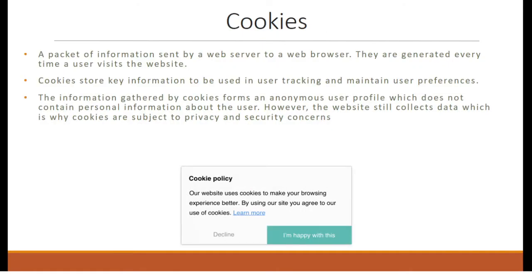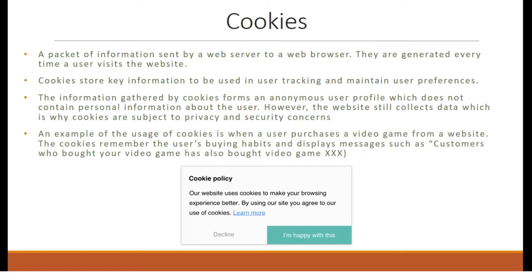Cookies. It is a packet of information sent by a web server to a web browser. They are generated every time a user visits the website. Cookies store key information to be used in user tracking and maintaining user preferences. The information gathered by cookies forms an anonymous user profile which does not contain personal information about the user. However, the website still collects data, which is why cookies are subject to privacy and security concerns. An example is when a user purchases a video game from a website — the cookie remembers the user's buying habits and displays messages such as 'customers who bought your game also bought game xxx.'